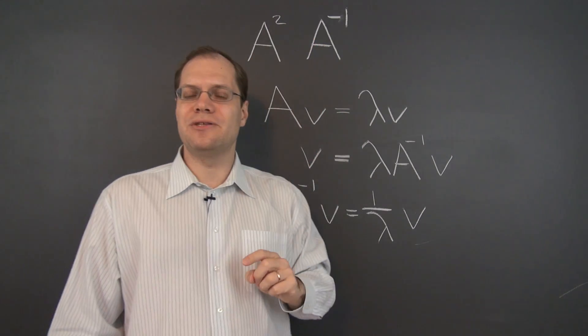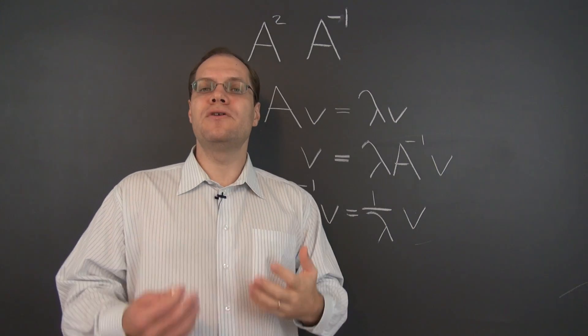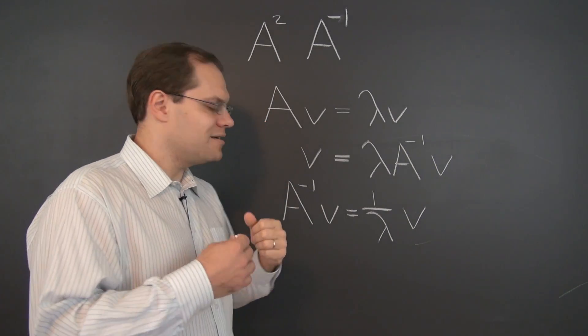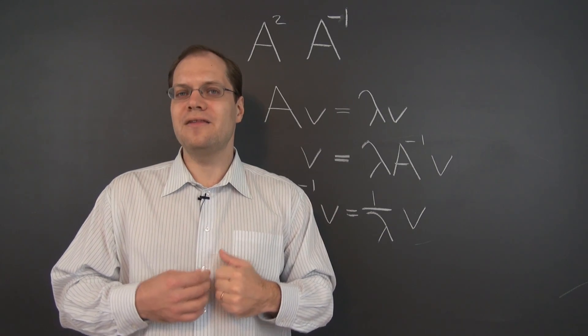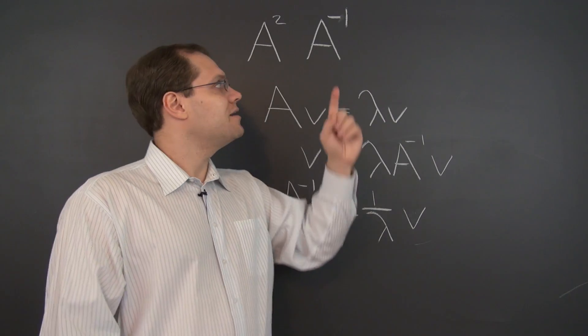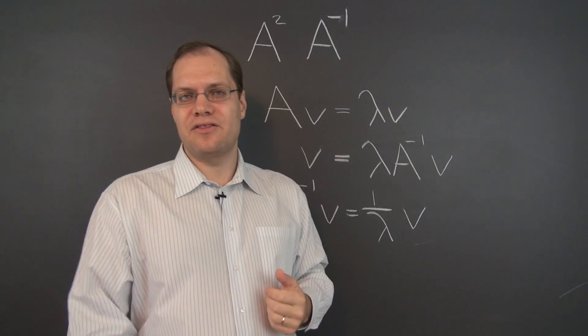Instead of A squared, we could have considered A to the N, applied the same logic, and we would have learned that the eigenvectors of A to the N are the same as the eigenvectors of A, and their eigenvalues are the eigenvalues of A raised to the Nth power.